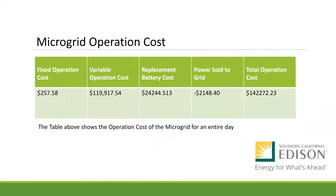For the microgrid operation cost, we have a fixed operation cost for our system coming out to $257.58. We have a variable operation cost for our system that's $119,054. We have a replacement battery cost which comes out to $24,244.51, and we get a profit from our power sold to the grid of $2,148, giving us a total operation cost of $142,272.23 for an entire day.